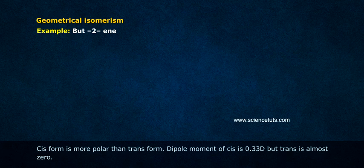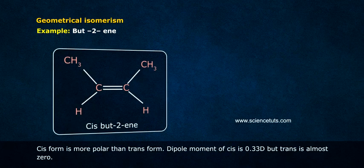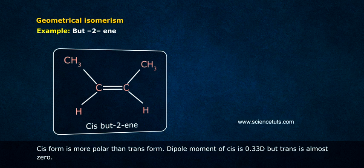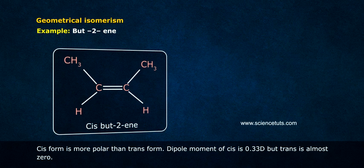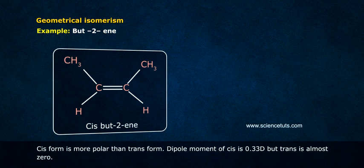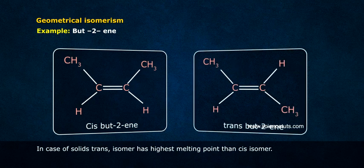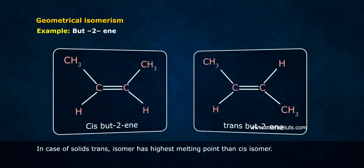Example: But-2-ene. Cis form is more polar than trans form. Dipole moment of cis is 0.33D but trans is almost 0. In case of solids, trans isomer has highest melting point than cis isomer.